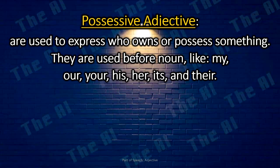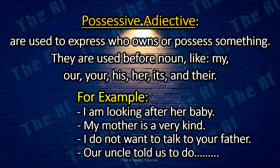Possessive adjectives are used to express who owns or possesses something. They are used in front of a noun, like my, our, your, his, her, its, and their. For example: I am looking after her baby. My mother is very kind. I do not want to talk to your father. Our uncle told us to do our homework.